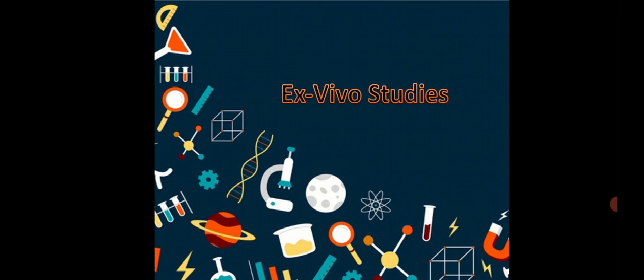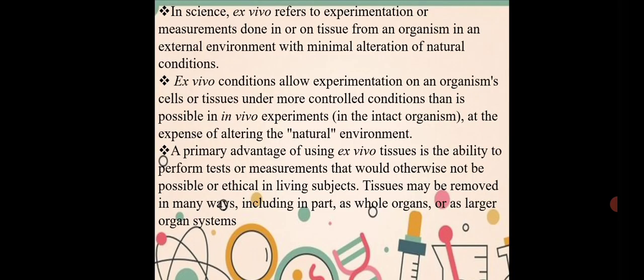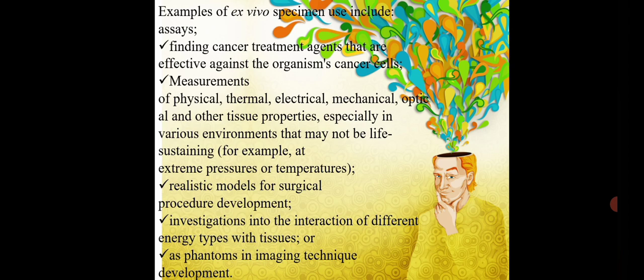Now, the last part of my presentation is ex vivo studies. This is the last section and this is very uncommon to all of you, so please do concentrate here. Ex vivo is generally the experimentation or measurement that is outside the body but a complete organ, tissue is being mimicked naturally. We are going to provide the controlled condition for the intact organism and altering the natural environment. And this ability test is to perform if the ethical committee is not allowing us for the in vivo test. The example of ex vivo test recently is finding the cancer treatment agent. We are using it for the cancer treatment agent. We are going to analyze the physical, chemical, mechanical and optical property of life sustaining drugs. It is going to be more realistic approach than the surgical development. It is going to be interaction of different types of energies and tissue.